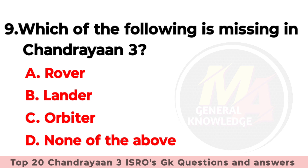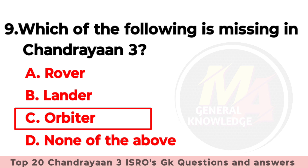Q9: Which of the following is missing in Chandrayaan-3? Friends, the right option is option number C — Orbiter.